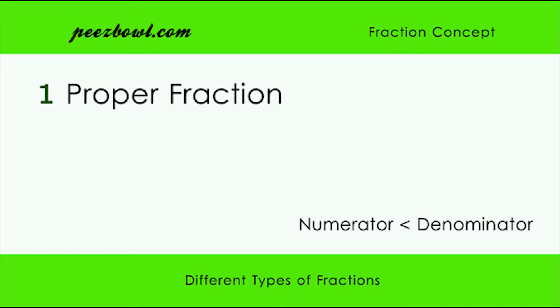Few examples of this type of fractions are 1 upon 4, 2 upon 7, and 8 upon 13. As you can see in the examples, denominator of all these fractions are greater than their numerator. Hence, these fractions are called as proper fractions.